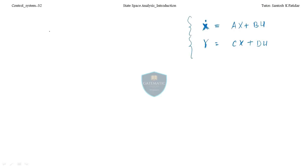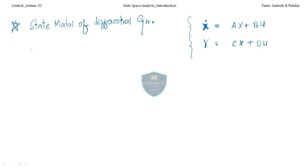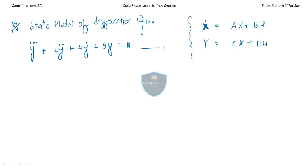Today we will see the state model of the differential equation. This is very easy and they are asking questions on this in the GATE examination also. Let me take one differential equation: y-triple-dot plus 2y-double-dot plus 4y-dot plus 6y equals u. This is the differential equation I am taking.